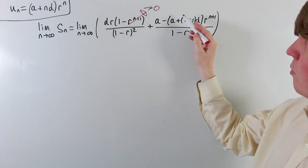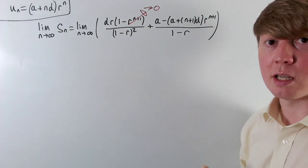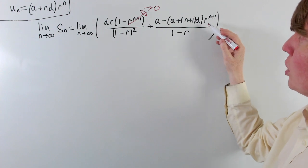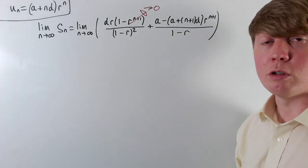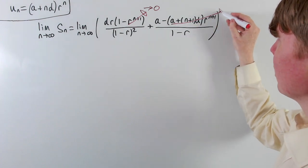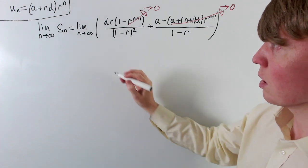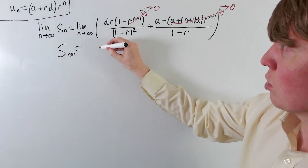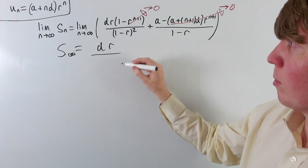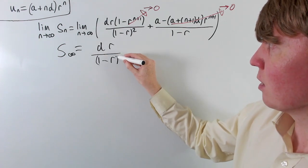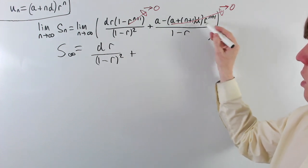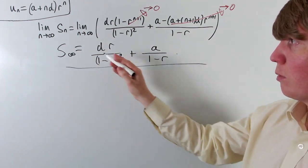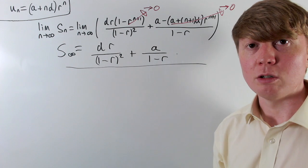The term (n+1)·r^(n+1) might seem problematic since (n+1) grows to infinity, but r^(n+1) goes to 0 much faster than (n+1) grows. So this entire term also converges to 0. Therefore the infinite sum S∞ = d·r/(1 − r)² + a/(1 − r). This is the formula for the infinite sum of an arithmetico-geometric sequence.